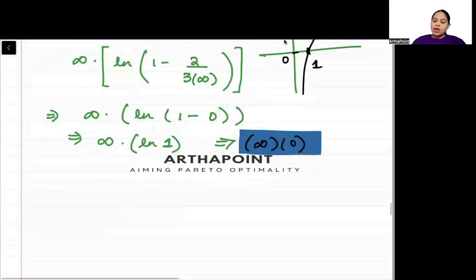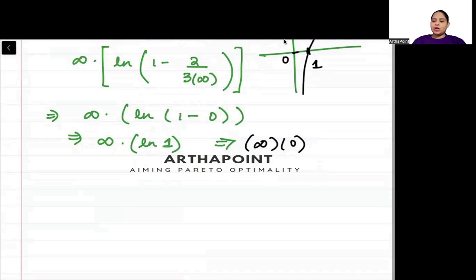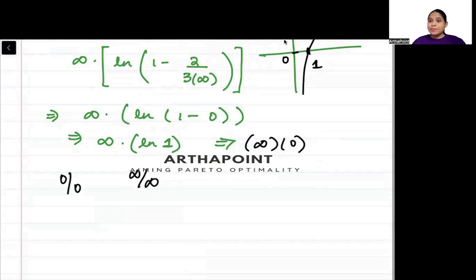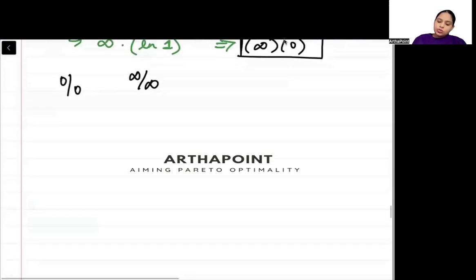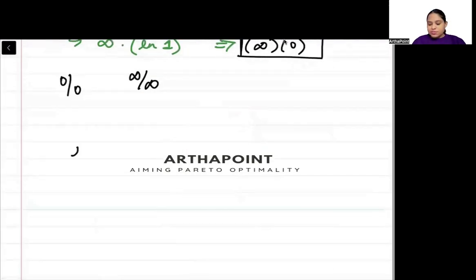We cannot solve this further as-is. Also, we cannot use L'Hôpital on this. To use L'Hôpital, you need a 0/0 form or ∞/∞ form — you need these forms. On ∞ × 0, L'Hôpital cannot be used. So now we need to transform this function.